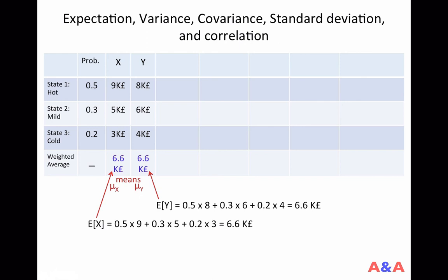The expectation or the mean of a random variable is a good measure of the average performance of that random variable. You are not sure about the sales of your brewery or your creamery. Their sales can be very high, can be very low. If you compute their means, 6.6,000 pounds is the mean of your brewery's sales and of your creamery's sales as well.